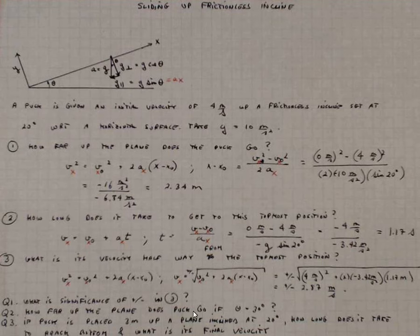Alright, so three questions. First of all, what is the significance of the plus and minus signs in question 3, which we are attributing to this v sub x that we're calculating?